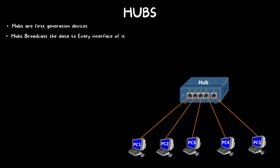Hubs broadcast data to every interface. Let's see how a hub works: consider 5 computers connected to one hub — PC1 on interface 1, PC2 on interface 2, PC3 on interface 3, PC4 on interface 4, and PC5 on interface 5. When PC1 wants to send data to PC4, the hub receives the data at interface 1 and, due to its broadcasting characteristic, broadcasts the data to all interfaces — interface 2, 3, 4, and 5.